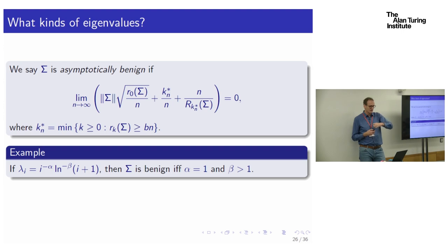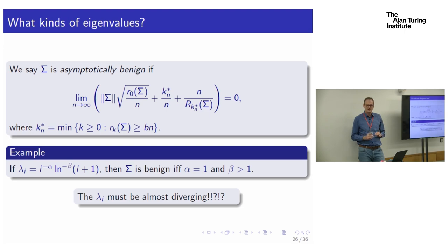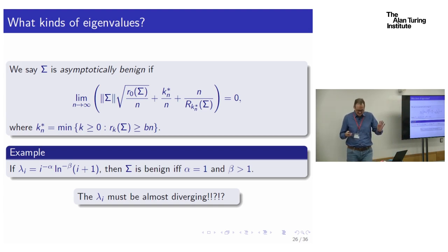It seems like we've proved benign overfitting occurs if and only if the eigenvalues decrease at this slowest possible rate to make things converge. In the infinite dimensional setting, this seems like an extraordinary phenomenon you would never expect to see. But if we go to finite dimensional settings — truncating at some perhaps very large dimension — things are more generic.